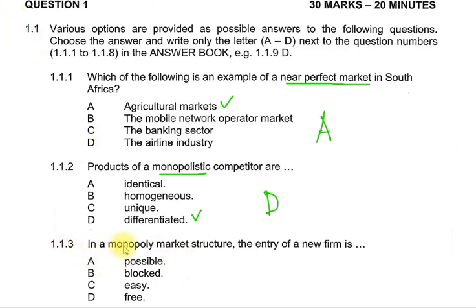Question 1.1.3: In a monopoly market structure, the entry of new firms. Looking at our keywords — monopoly as one of our market structures and the entry of new firms — we know very well that new entry is completely blocked. So B is the correct answer for 1.1.3.